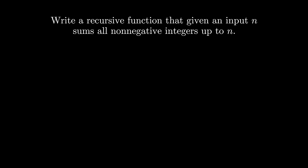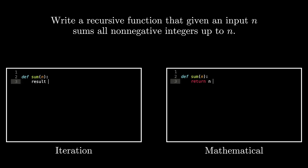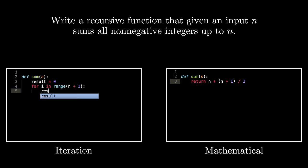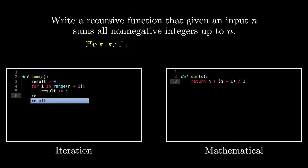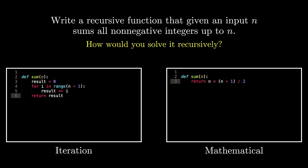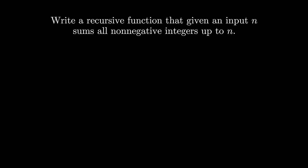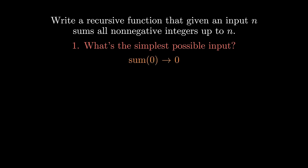A lot of you may have seen an iterative version of this function or even a mathematical version of it that we went through in a previous video. But if you had to solve it recursively how would you do it? Recursion is all about taking a problem and solving it using simpler versions of the problem. So the first step in solving a recursive problem requires you to ask yourself: what's the simplest possible input for the function? Here the simplest possible case is n equals zero, where we know that the result should also be zero.